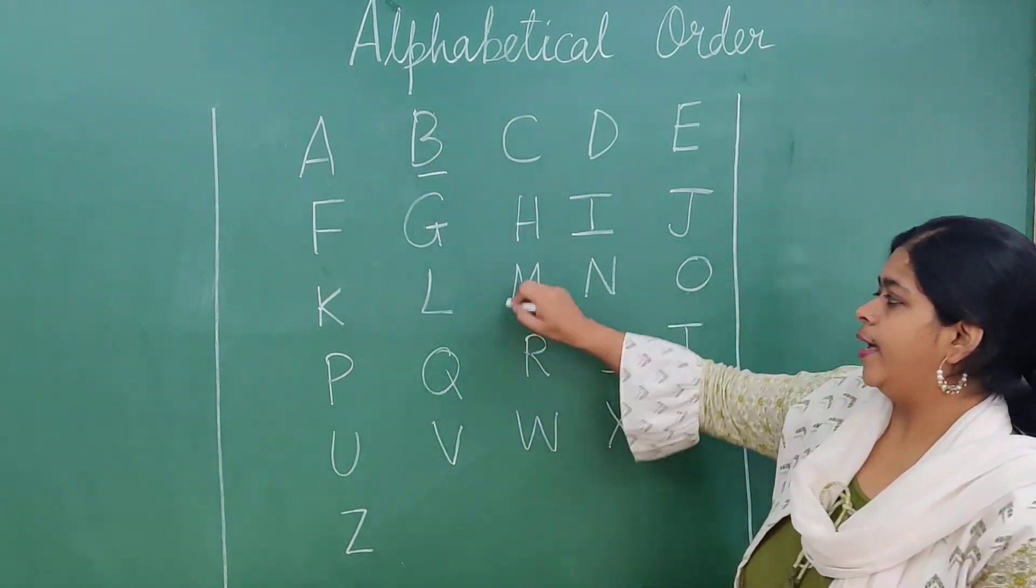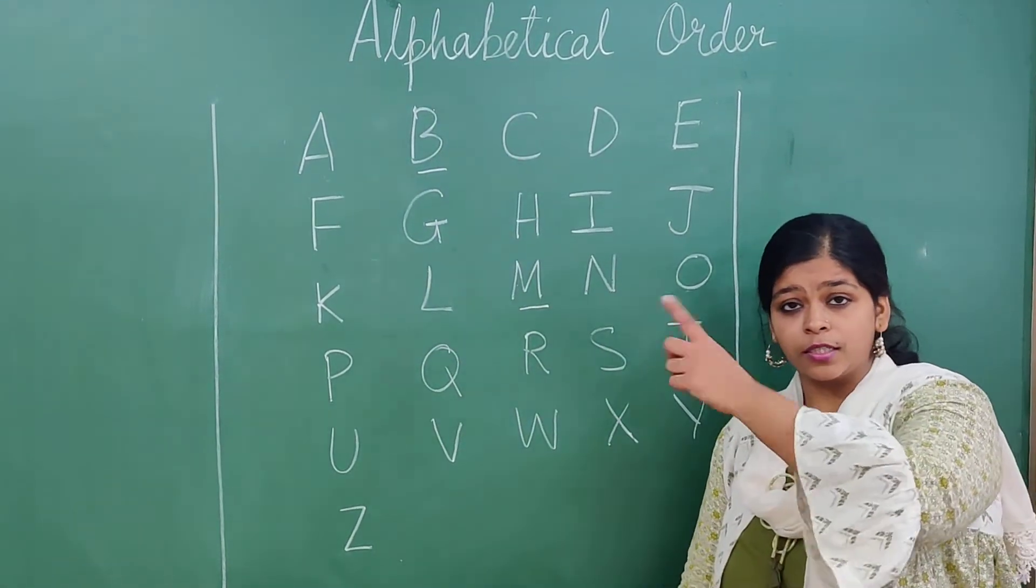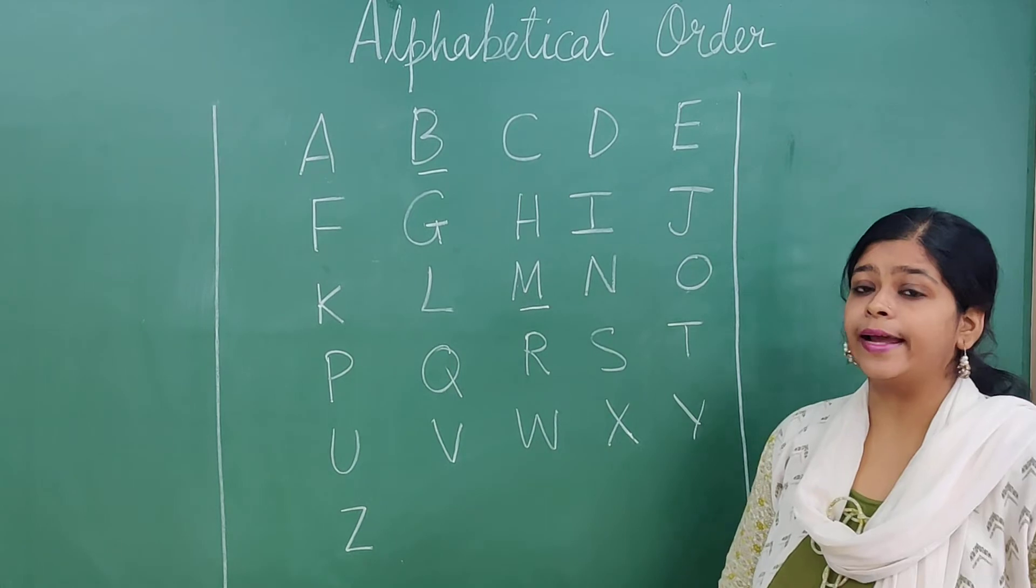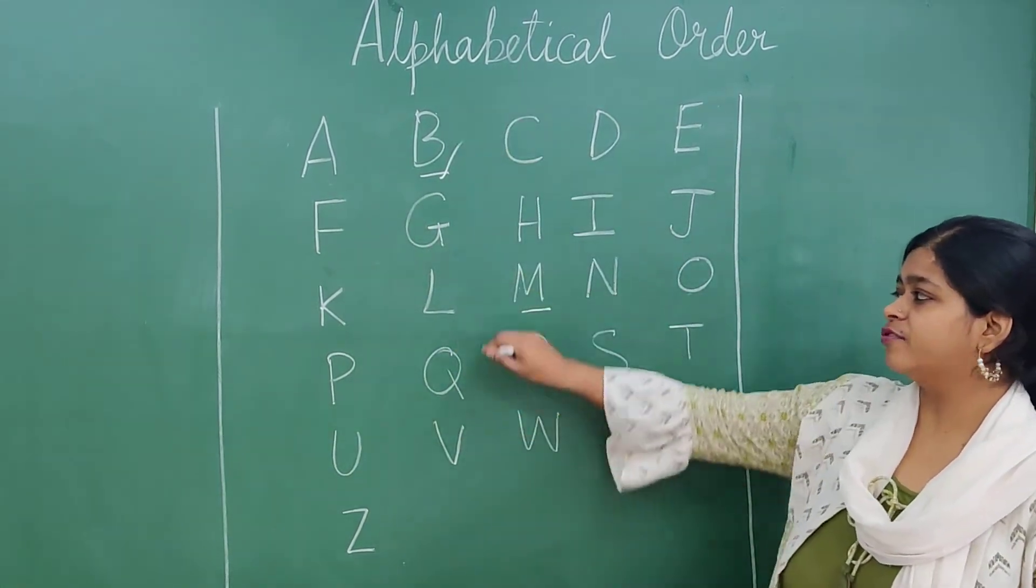So, by here B is here, M is here. So, which one is first in the order? Yes, you are right, it's B and after that is M.